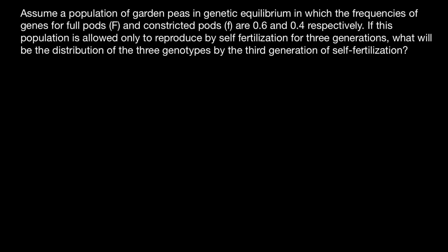Hello and welcome to Nikolai's Genetics Lessons. Today's problem: assume a population of garden peas in genetic equilibrium in which the frequencies of genes for full pods (capital F) and constricted pods (small f) are 0.6 and 0.4 respectively. If this population is allowed only to reproduce by self-fertilization for three generations, what will be the distribution of the three genotypes by the third generation?